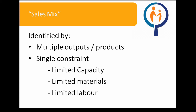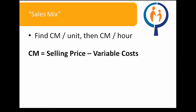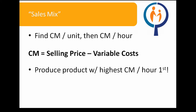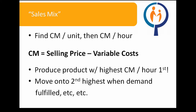Another decision-making scenario we'll be looking at today is the sales mix or product mix scenario. These scenarios are characterized by multiple products and a single constraint, such as limited capacity, limited raw materials, or limited labor. When dealing with sales mix problems, we want to find the contribution margin per unit, then the contribution margin per hour for each product. A reminder that the contribution margin is the selling price minus the variable cost. Our optimal production plan will be to produce as much as possible of the product with the highest contribution margin per hour, then move on to the product with the second highest contribution margin per hour.